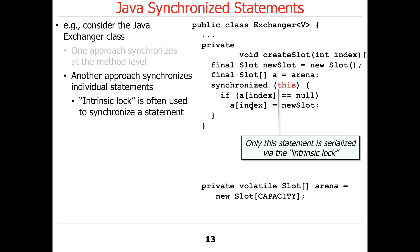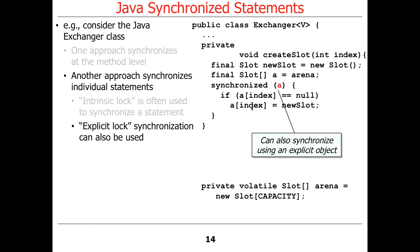Often we use synchronized statements on the implicit lock — 'this' — but that's not required. Instead of synchronizing on this, it's perfectly plausible to synchronize on something else, like the arena object. Basically, anything that's not a built-in type instance can be synchronized on because they all have an intrinsic lock. You can synchronize only a portion of a method, and you could also have different synchronizers for different parts of the method, thereby reducing contention. We'll see examples of this when we discuss Java LinkedBlockingQueue.